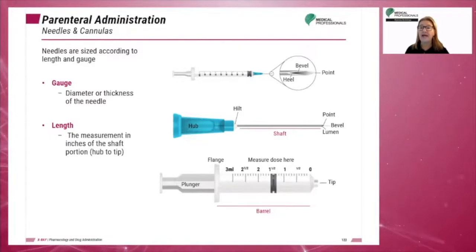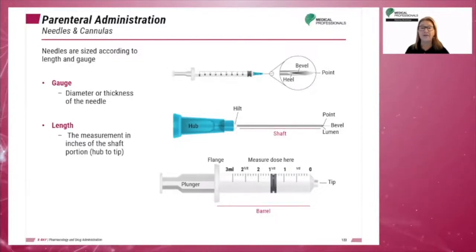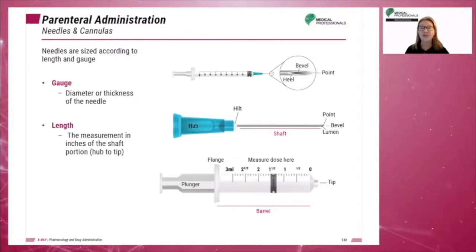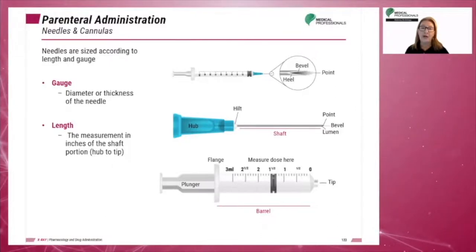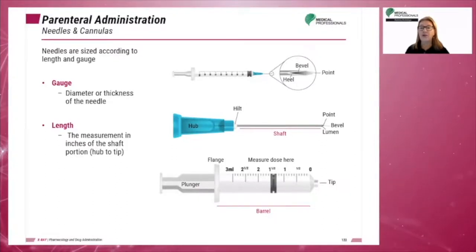Needles are sized according to length and gauge. Gauge is the diameter or thickness of the needle. The length is the measurement in inches or centimeters of the shaft portion from the hub to the tip. The smaller the diameter of the opening or lumen, the larger the gauge number.